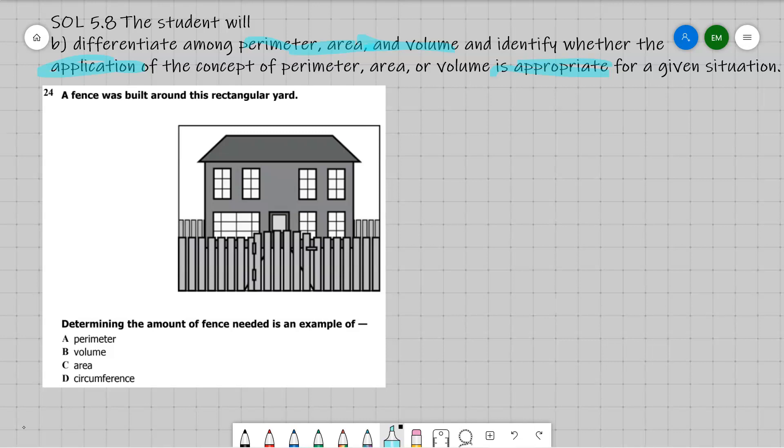What they want is, what is it describing? Which one of those three is it describing? So let's go ahead and read our problem. And I'm going to highlight some of the key vocabulary as I read this. So a fence, oh that's going to be important, was built around this rectangular yard. And there's a picture of the yard.